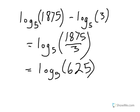Then we can simplify: 1,875 divided by 3 is 625. We can type this into our calculator — remember to use the change of base — and we get the answer 4, because 5 to the 4th power gives you 625.